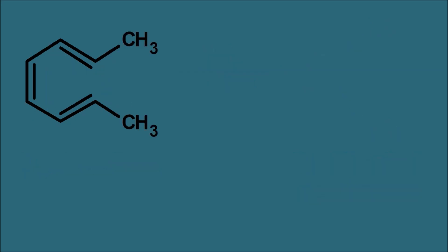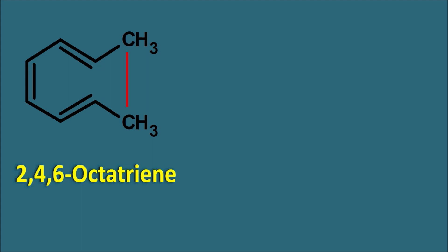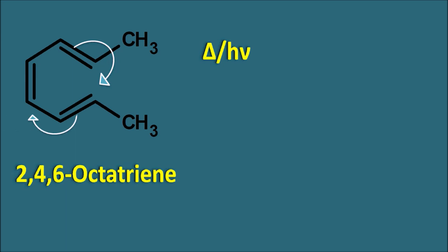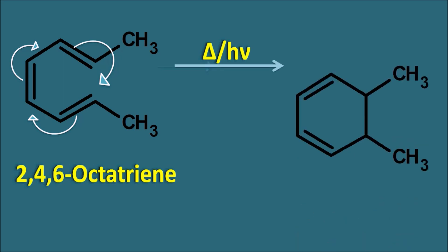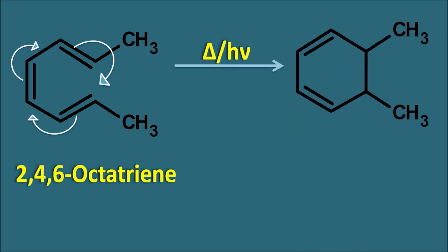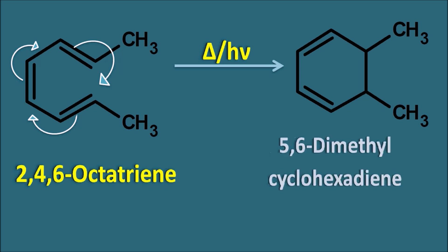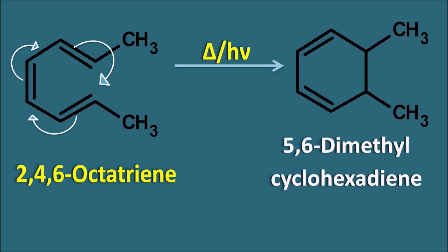Let us take another example. This is 2,4,6-octatriene, having three double bonds. Let us see what happens to the configuration when it is reacted with either thermal or photo energy. We should not confuse that the bond is going to be formed between carbons not adjacent to the pi system. When we supply thermal or photo energy, this pi bond comes to form a sigma bond, this pi bond is delocalized, and again this pi bond is delocalized to the adjacent carbon, forming a product which is a cyclohexadiene with two methyl groups — that is, 5,6-dimethylcyclohexadiene.